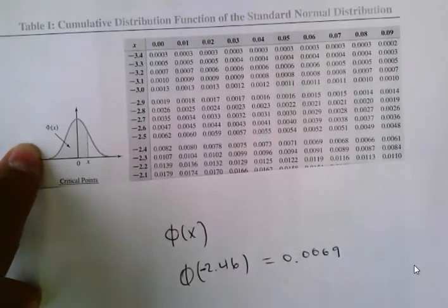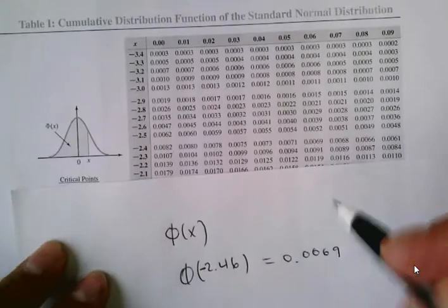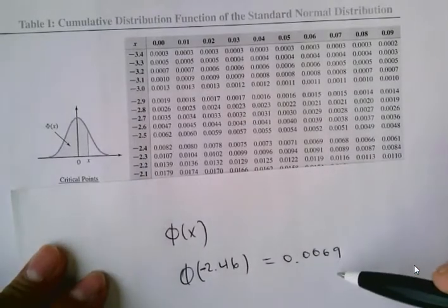And if we want to know the area to the right, then what we do is 1 minus this number.